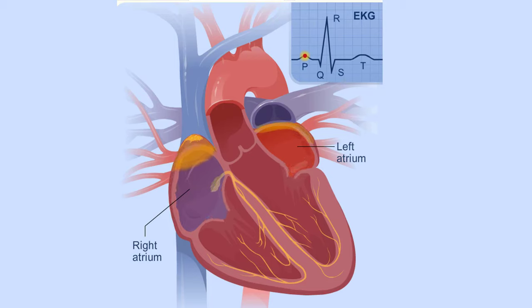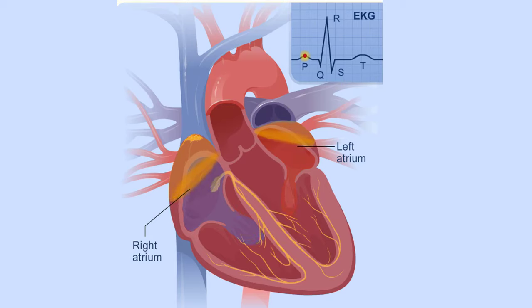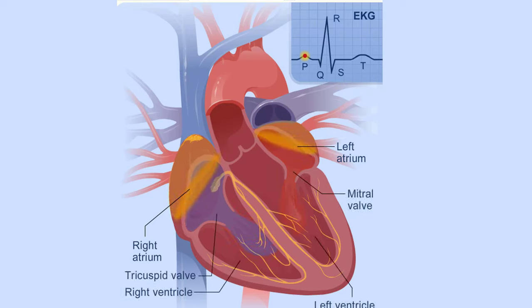This signal causes the atria to contract, or squeeze. This pumps blood through the open valves from the atria into both ventricles. The P wave on the EKG marks the contraction of your heart's atria.